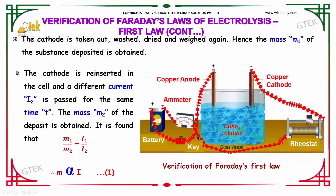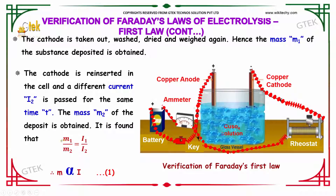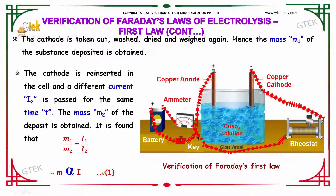The cathode is reinserted in the cell and a different current I2 is passed. The mass M2 of the deposit is obtained. It is found that M1 divided by M2 is equal to I1 divided by I2, which indicates the mass of the substance is directly proportional to the current passed.